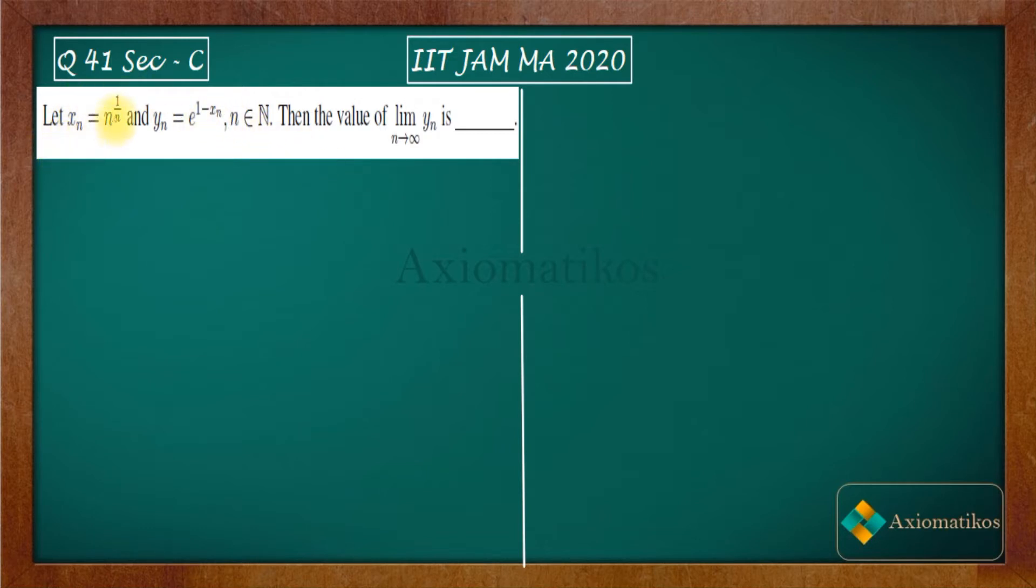Let XN is given by this and YN is given by this. Then the value of limit N goes to infinity YN is. So this is your question. It's a very easy question. So what is important over here is this fact that I want to tell you.